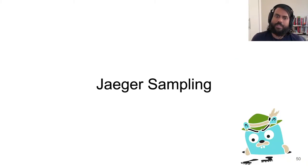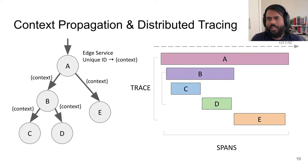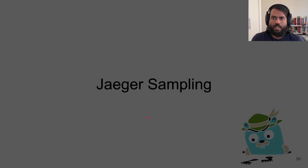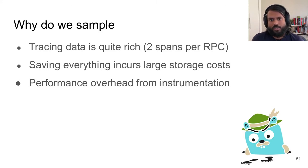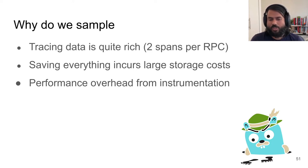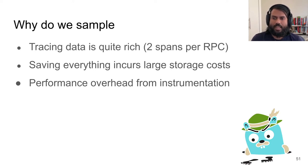Jaeger data is very rich — for every RPC, spans are being generated, and this is a large volume of data. To control the volume of data, Jaeger performs sampling by default. Sampling is the notion that only some percentage or population of traces will collect data and be stored. There are several different ways of doing sampling, but the most common is head-based sampling, where every request has a sampling decision that is made and propagated.